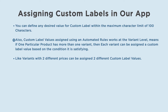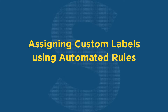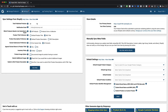Custom label values assigned using automated rules work at the variant level, meaning if one particular product has more than one variant, each variant can be assigned a custom label value based on the condition it is satisfying. For example, variants with two different prices can be assigned two different custom label values. You can define automated rules for custom labels within our app using the options listed. Let's proceed with assigning custom labels using automated rules.